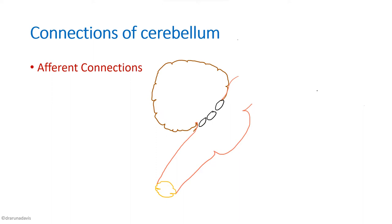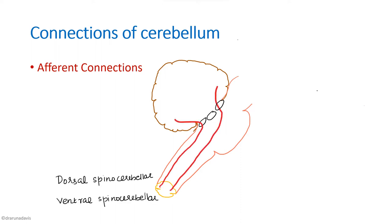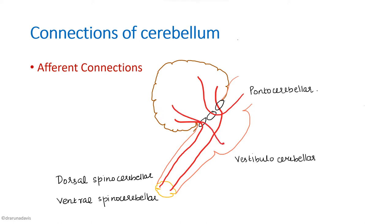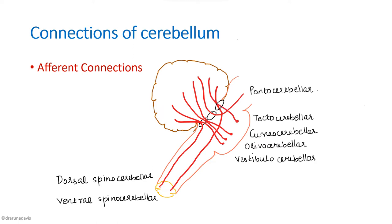The spinocerebellum receives information from the spinal cord via two major tracts: the dorsal spinocerebellar and the ventral spinocerebellar. From the pons, we have the pontocerebellar tract, which is the only tract entering through the middle cerebellar peduncle. From the midbrain, we have the vestibulocerebellar tract, which receives information from the vestibular nuclei.